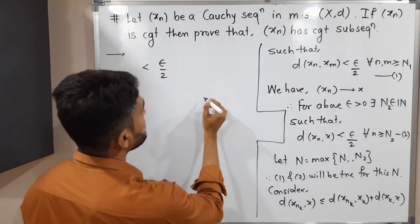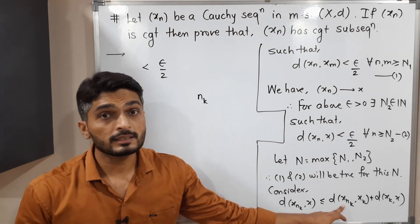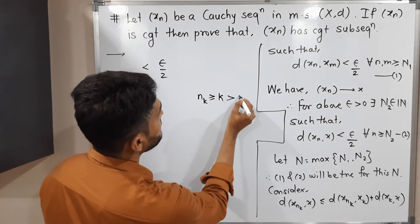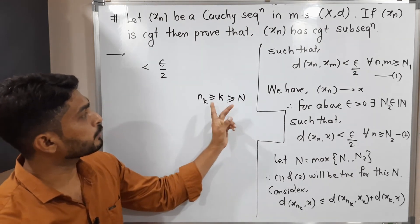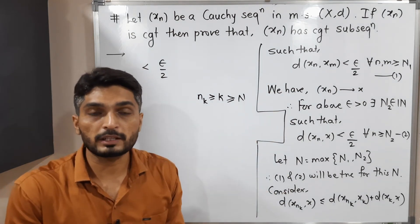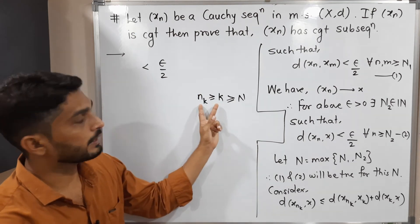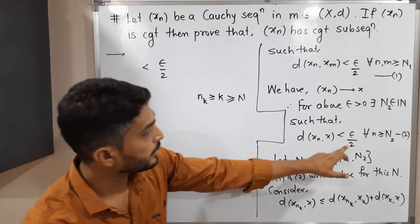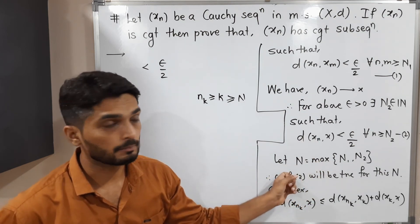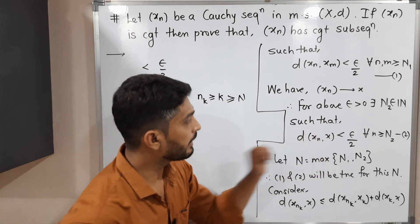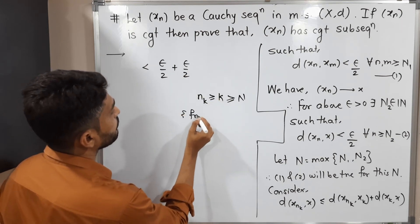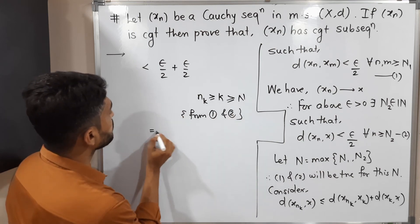The condition we need is that NK ≥ N. Since XnK is a subsequence, NK is obviously greater than or equal to K. And if K ≥ N, then both NK and K are greater than or equal to N, so we can apply inequality one. For D(XK, X), since K ≥ N and N ≥ N2, by inequality number two this is less than ε/2. From inequalities one and two, we get ε/2 + ε/2 = ε.